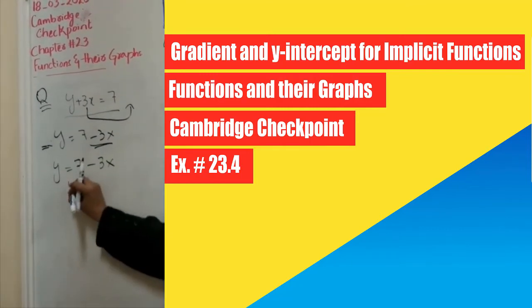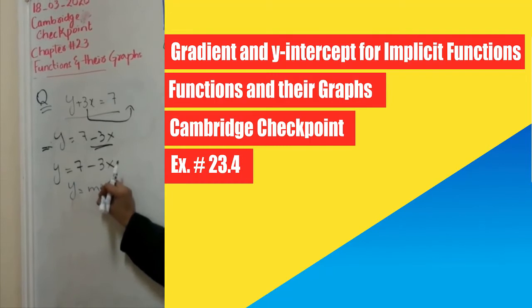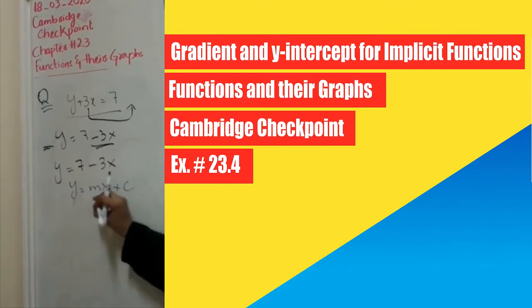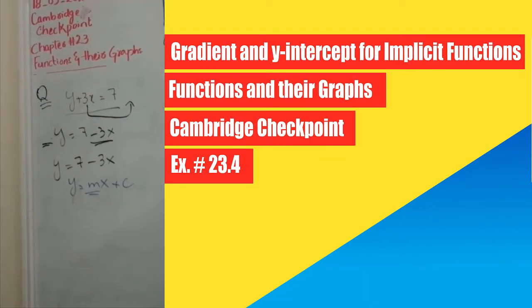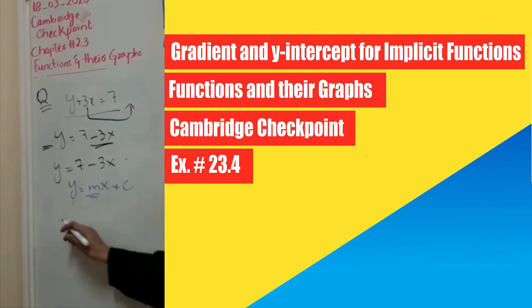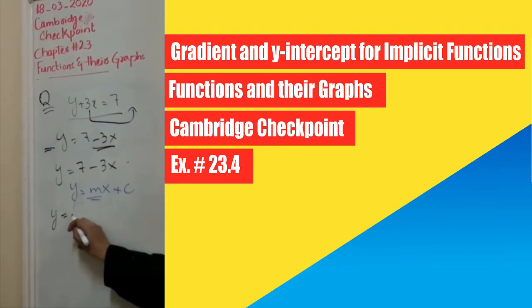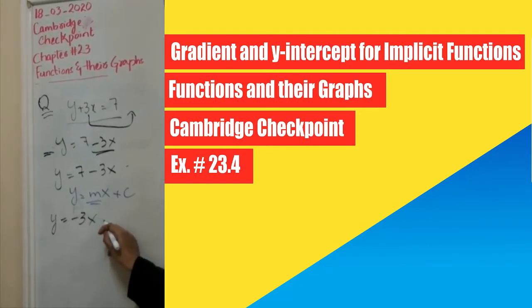Because general equation is y equals mx plus c, right? So we have to write like this: x. So I'm going to write this expression over here: y equals minus 3x plus 7.